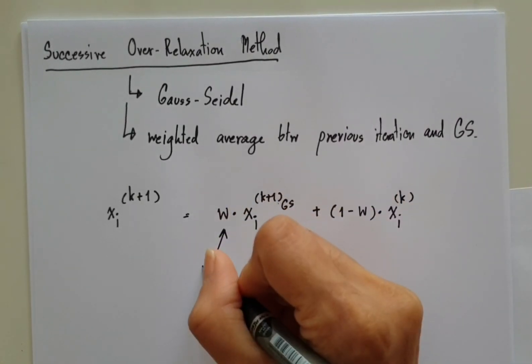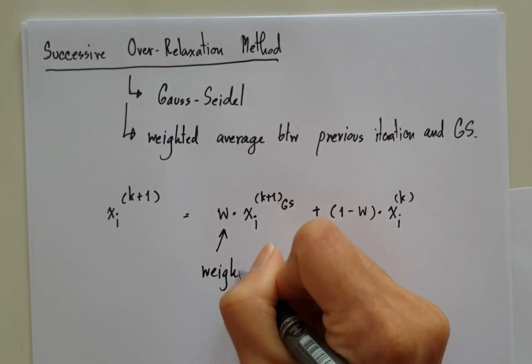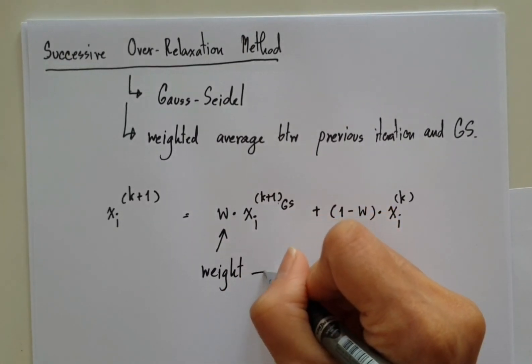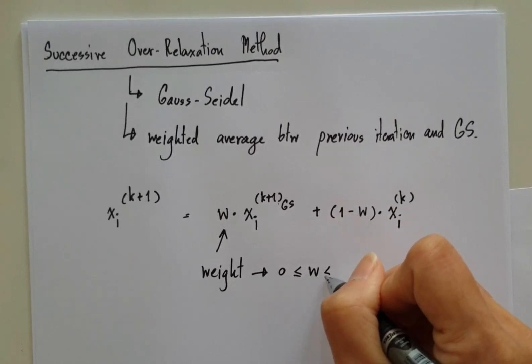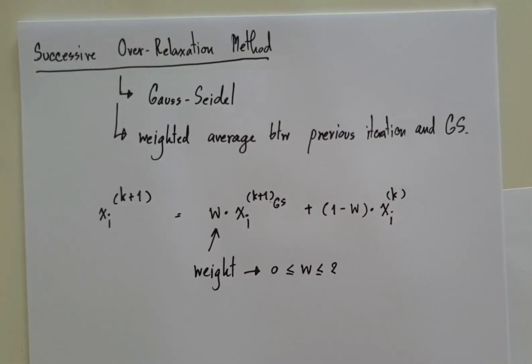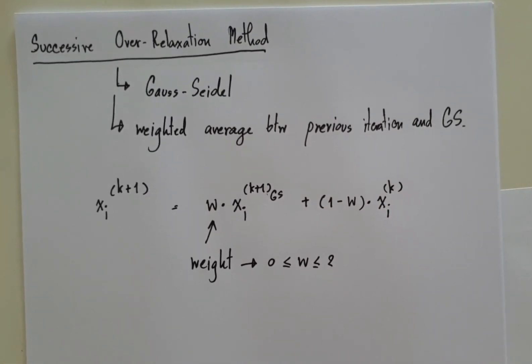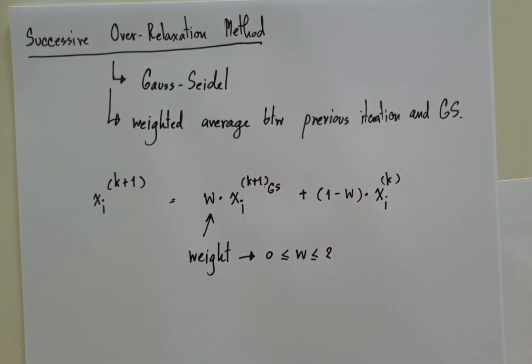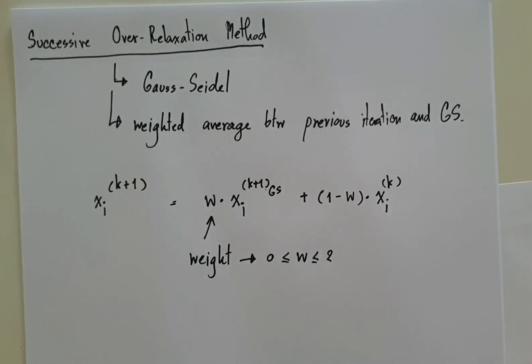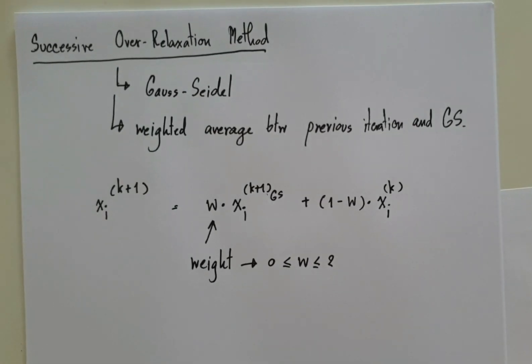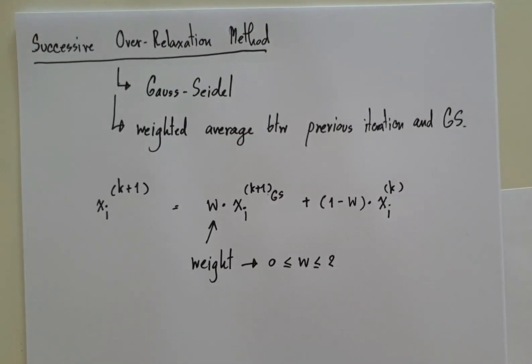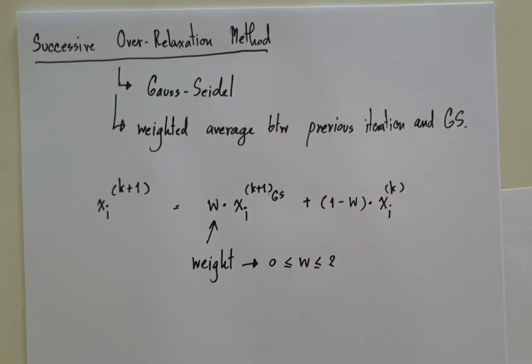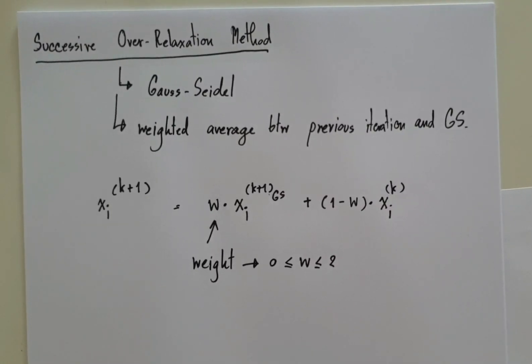So weight will normally be set in between 0 and 2. If it is above 2, it may lead to non-convergence. This means the solution will not converge after we run the iteration for a certain period.